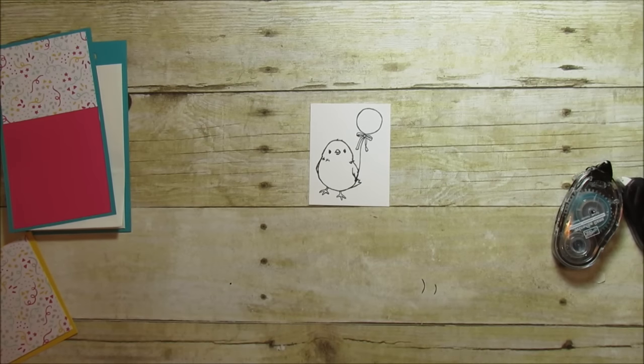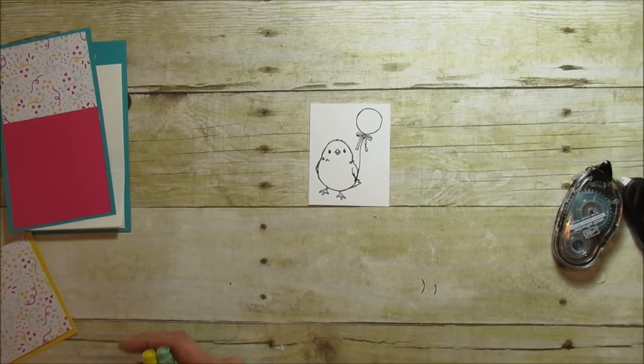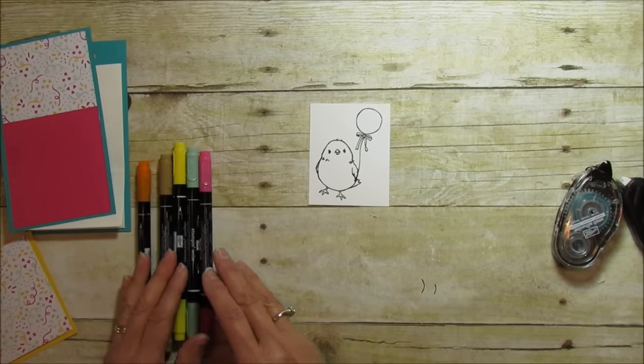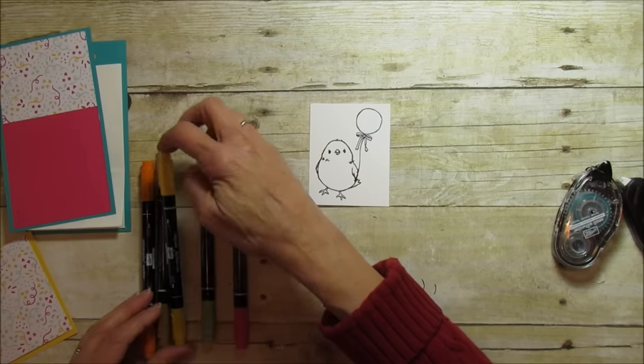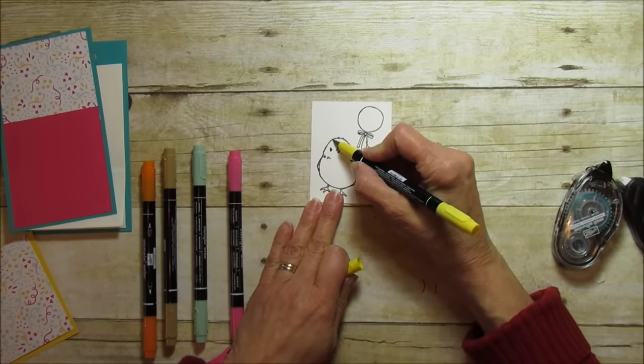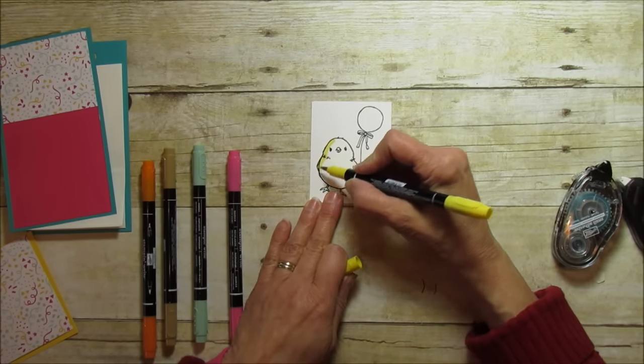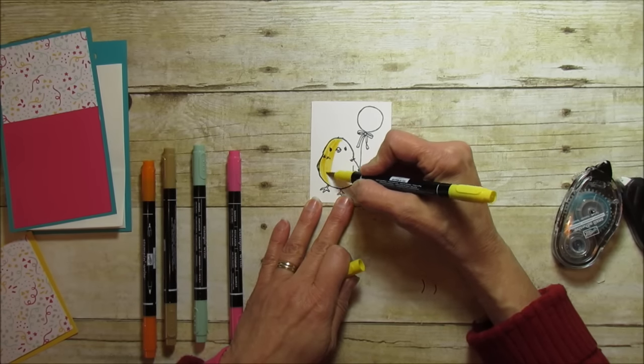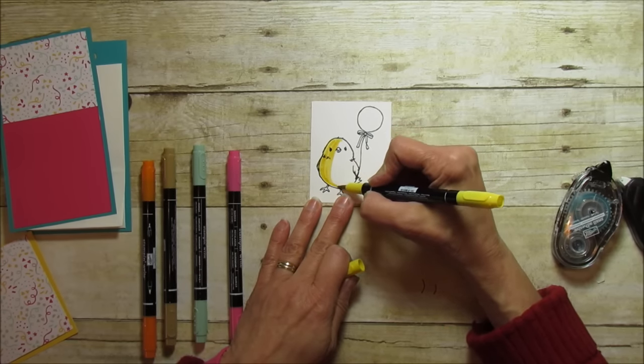So this time, the last time I used my blender pen and my Stampin ink pads and this time I'm going to color him in with my Stampin write markers. So I'm going to go ahead and do that. I will speed up the video so you don't have to sit and watch me color this all in.